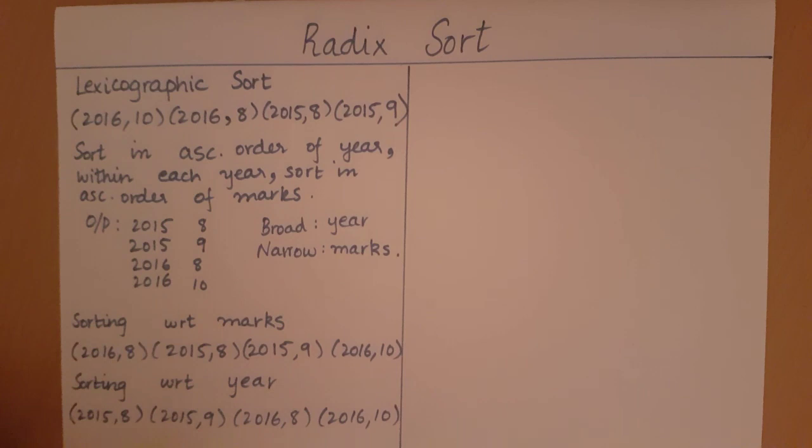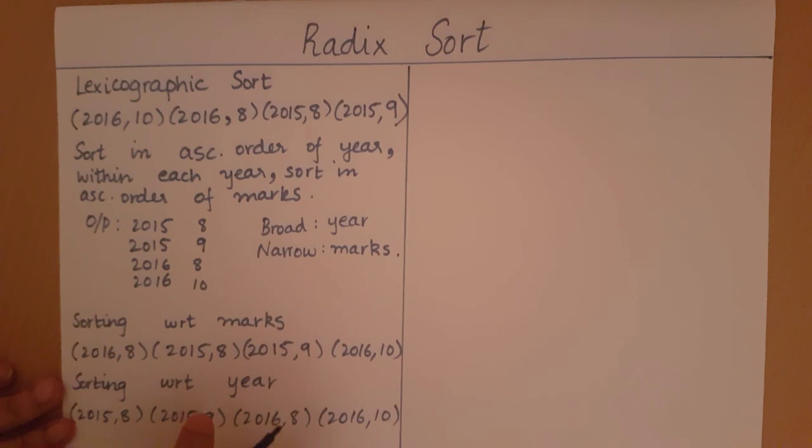Even in this second pass we are using a stable sort, because the key was the same for (2015, 8) and (2015, 9). So the order in which they were present in the unsorted array is preserved in the sorted array. This is how a lexicographic sort works.